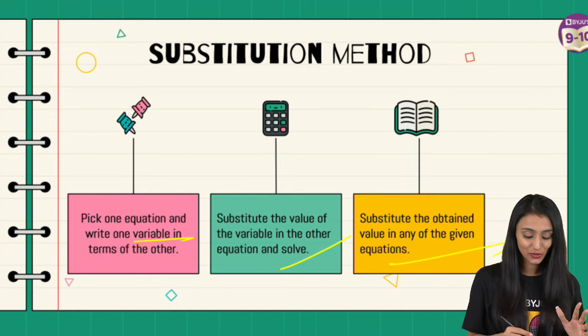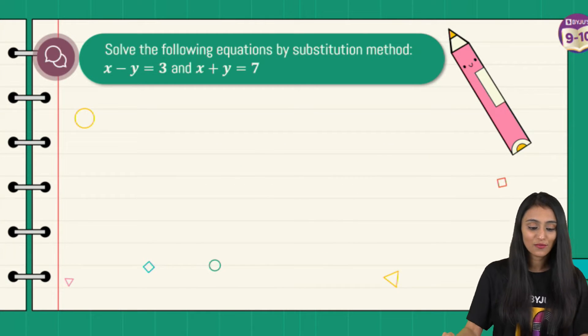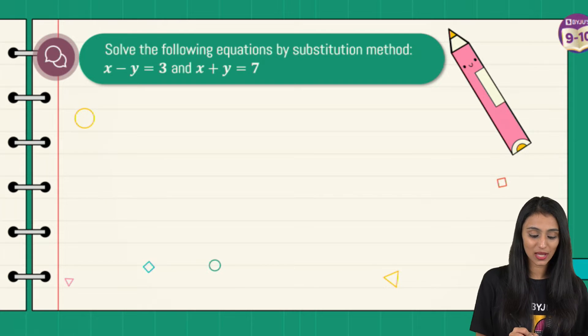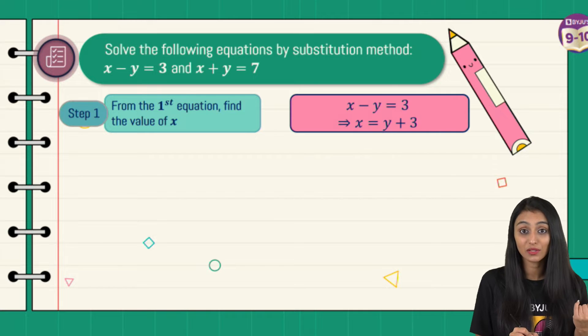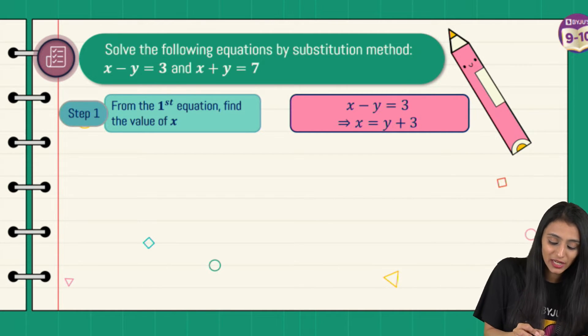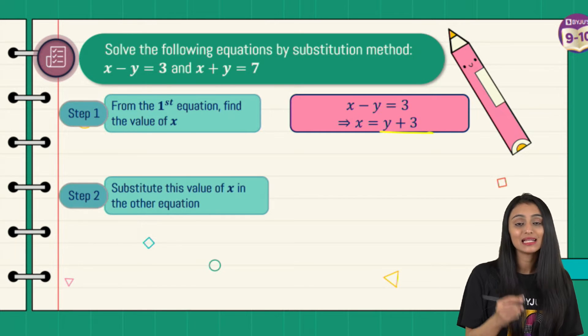Now let's take an example to understand this. Solve the following equations by substitution method: x minus y equals 3 and x plus y equals 7. Both equations look simple, so let's pick any equation. Let's say we pick equation number one and find the value of x. You can find the value of y as well, but let's say I'm finding x. That's going to be y plus 3.